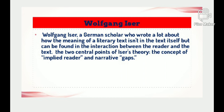The second important theorist is Wolfgang Iser, a German scholar who wrote about how the meaning of a literary text isn't in the text itself, but can be found in the interaction between the reader and the text. His two central concepts are the implied reader and gaps. The implied reader is a hypothetical figure who is likely to understand most of what the author intended. When an author writes, they often do so with a certain reader in mind, believing that the implied reader will understand metaphor, allusion, and irony in the work. Additionally, literary works leave interpretive gaps that readers are supposed to fill in with their own meaning.